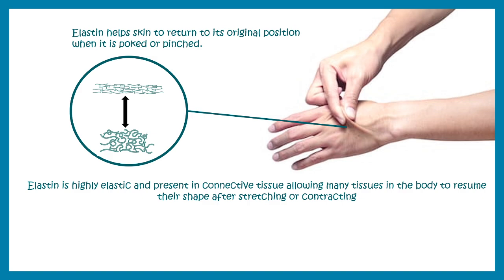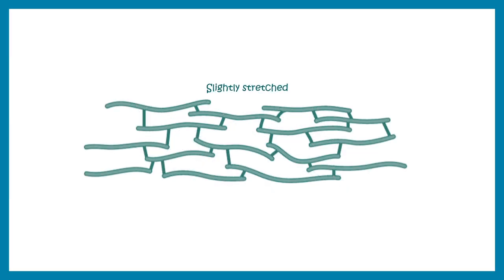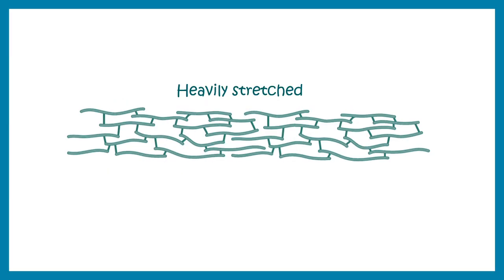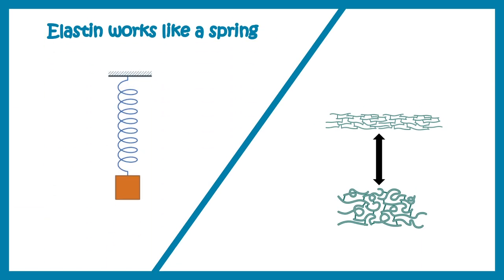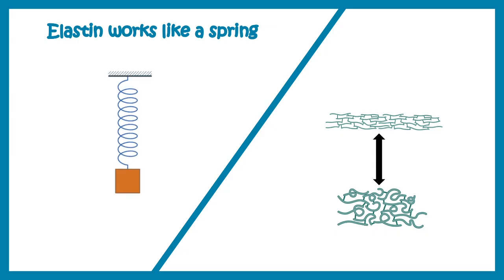Elastin helps to maintain the skin and other tissues such as lungs, which need to relax or expand, helping to maintain structural integrity. Elastin has a relaxed state and can be stretched into several different conformations. It is pretty much like a spring — when a deforming force is applied, there is deformation, but eventually it is restored.